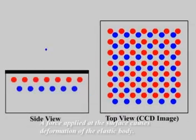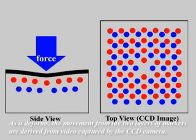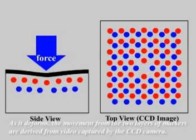A force applied at the surface causes deformation of the elastic body. As it deforms, the movement from the two layers of markers are derived from video captured by the CCD camera.